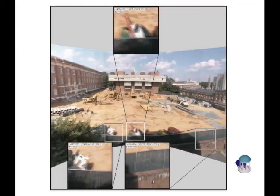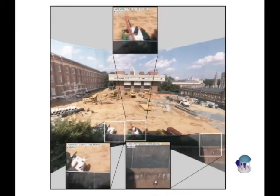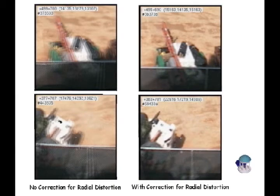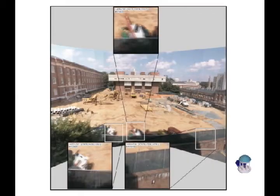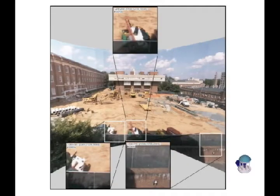Next, a global alignment method registers all the images into a calibrated mosaic. Camera intrinsics and radial distortion parameters are estimated during this step. Here we toggle between the distorted and the undistorted cubemaps.